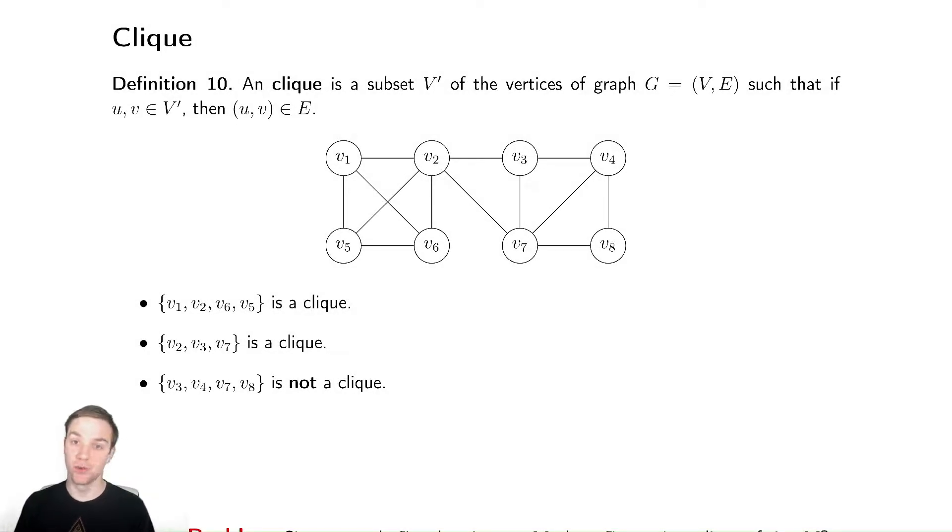We're going to continue our investigation of graph theory problems that are NP complete. A similar problem to independent set is somewhat of the opposite problem, which is a clique.